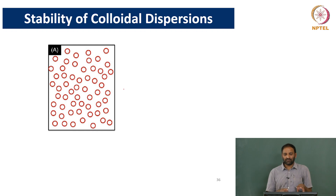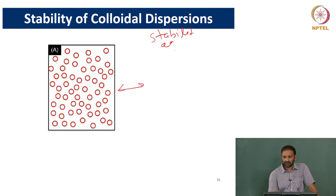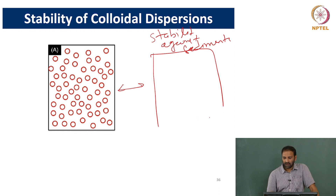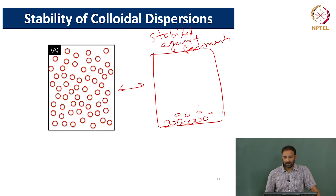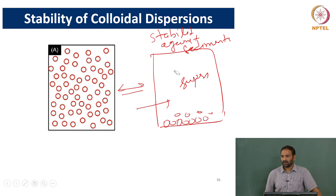We can think about stability in 2 different ways. I can think about something called stability against sedimentation — that means if I have a dispersion and leave it for a while, everything settles down. But typically, such a thing will only happen when you are working with suspensions where the particles are larger in size.